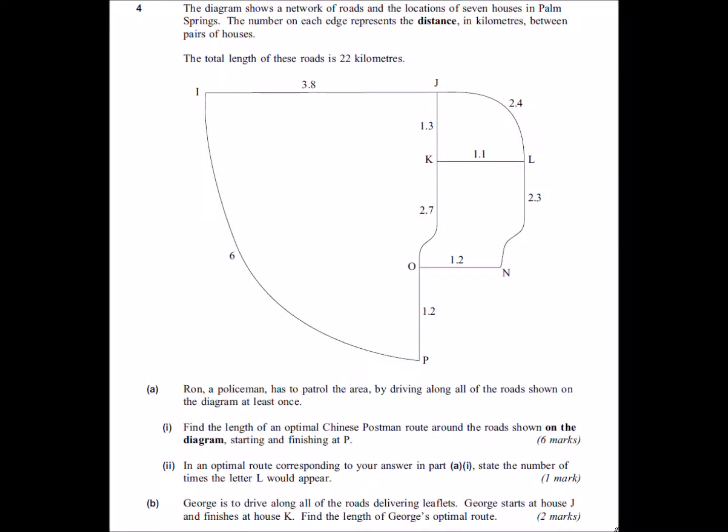Question 4 in the Use of Maths decision paper from June 13 says the diagram shows a network of roads and the locations of seven houses in Palm Springs. The number on each edge represents the distance in kilometres between pairs of houses and the total length of all these roads is 22 kilometres.